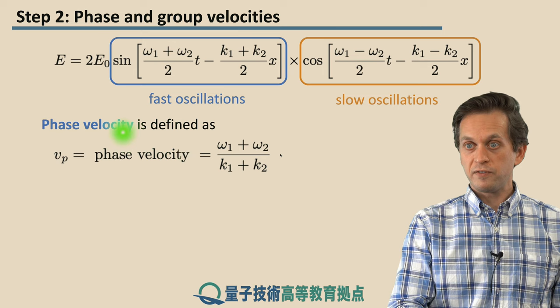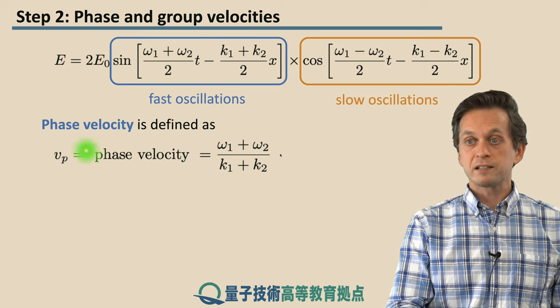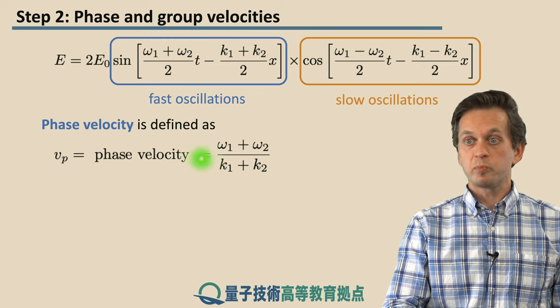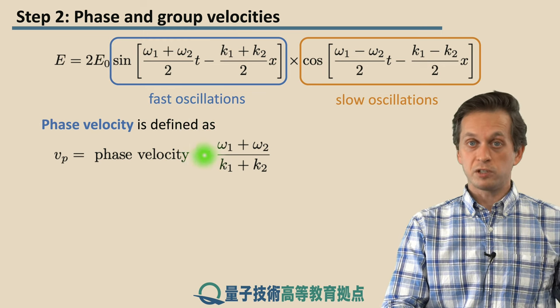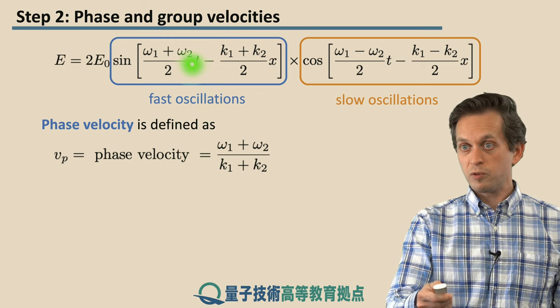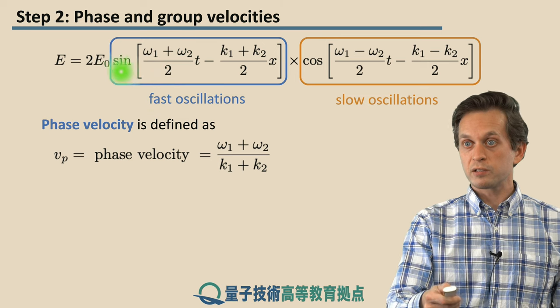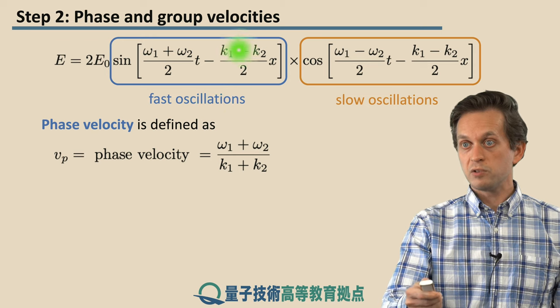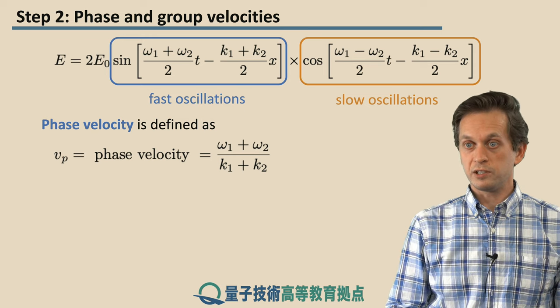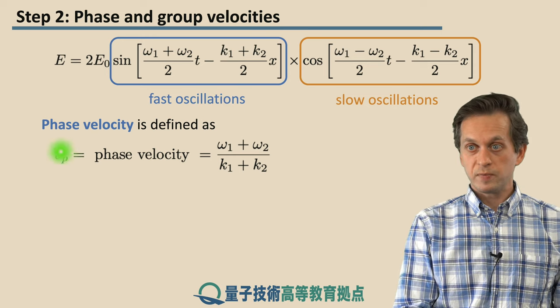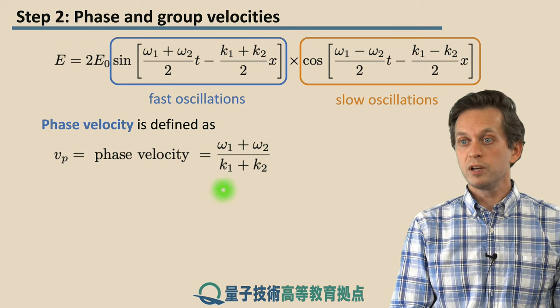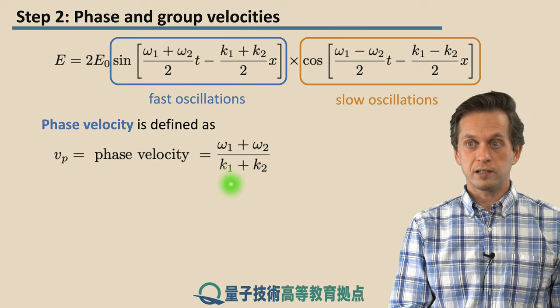So we define the phase velocity as the velocity of this fast oscillating term. So previously we said that for a single wave it's just ω over k, but here we saw that this ω1s and ω2s result in this new angular frequency for the fast oscillations, and this new wave number for the fast oscillations. So vp, the phase velocity, is equal to ω1 plus ω2 divided by k1 plus k2.